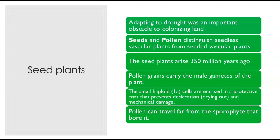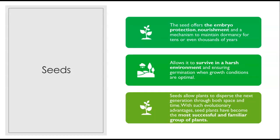Pollen can travel far from the sporophyte that bore it, which is important because you don't want inbreeding. Seeds offer the embryo protection, nourishment, and a mechanism to maintain dormancy for tens or even thousands of years, allowing survival in harsh environments and ensuring germination when conditions become optimal. You could have a packet of seeds on your desk your entire lifetime and then plant it successfully. Seeds also allow plants to disperse the next generation through both space and time. With these evolutionary advantages, seed plants become the most successful and familiar group of plants to us.